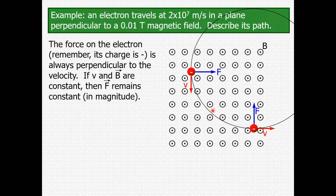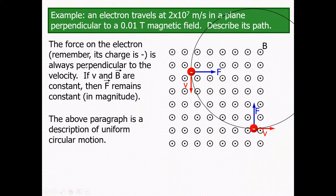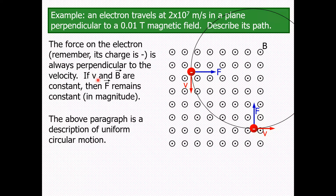In this condition, if velocity and magnetic field are constant, the force will be constant. This situation describes uniform circular motion — a constant force on a charged particle moving in a uniform magnetic field results in a circular trajectory.